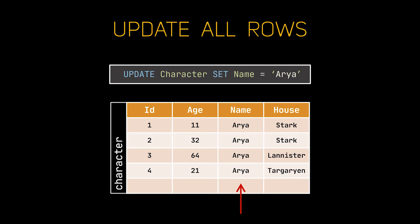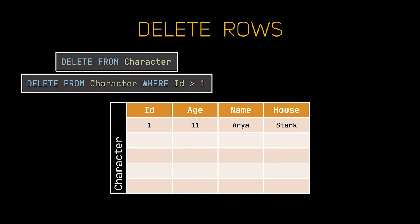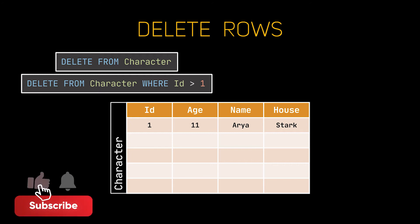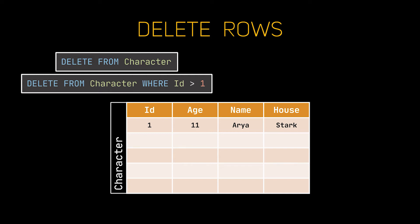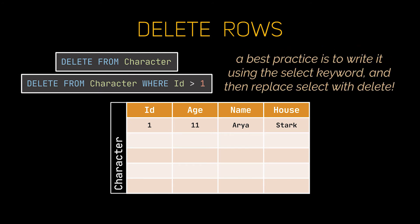Now we kind of messed up our table again. To fix it, instead of updating, what we are going to do is delete the extra rows we have. Just specify the record you want to delete by making sure that the identifier is specific only to this row, and it will be deleted. If you do not specify an identifier using the WHERE keyword, all the records inside this table will be deleted. To fix our problem and return to our starting point in this example, we are going to delete all the rows with an id greater than 1. A best practice to delete rows is to first write the query using the SELECT keyword, execute it to make sure it is indeed the record you'd be deleting, and then replace the word SELECT with the word DELETE.